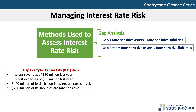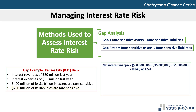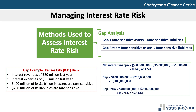Let's look at an example. Kansas City or KC Bank had interest revenues of $80 million last year and interest expenses of $35 million. Approximately $400 million of its $1 billion in assets are rate sensitive, and $700 million of its liabilities are rate sensitive. Kansas City Bank's net interest margin is 4.5%. KC Bank's gap is negative $300 million, and its gap ratio is 57.14%.